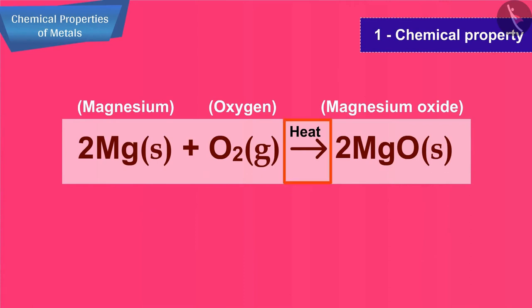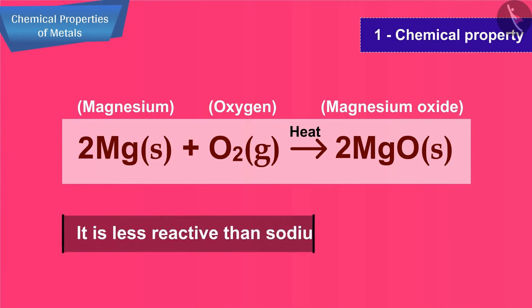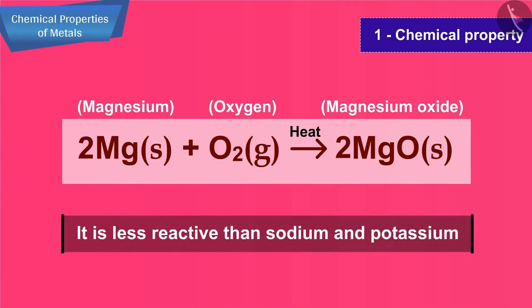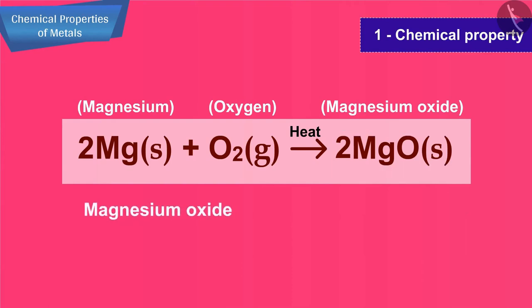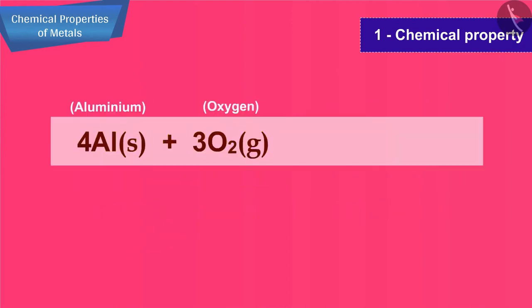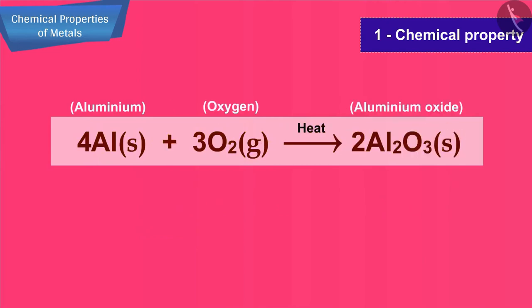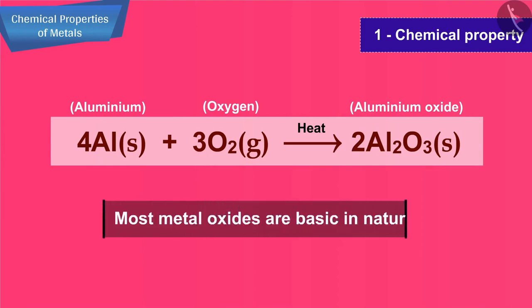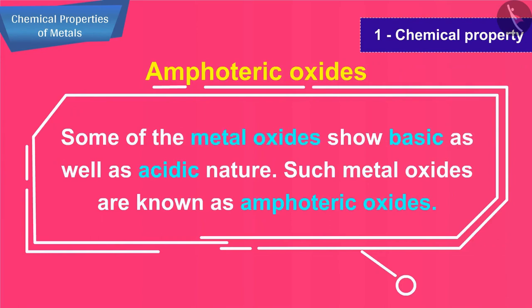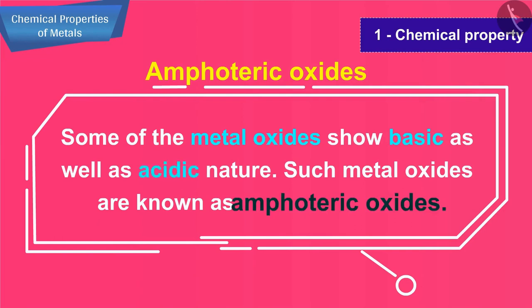Since it required heat for the reaction to occur, magnesium is less reactive than sodium and potassium. Also, the product is magnesium oxide which is partially soluble in water, so it is a base. Aluminium metal burns in air on heating to form aluminium oxide. Although most metal oxides are basic in nature, some of the metal oxides show both basic and acidic nature. Such metal oxides are known as amphoteric oxides.